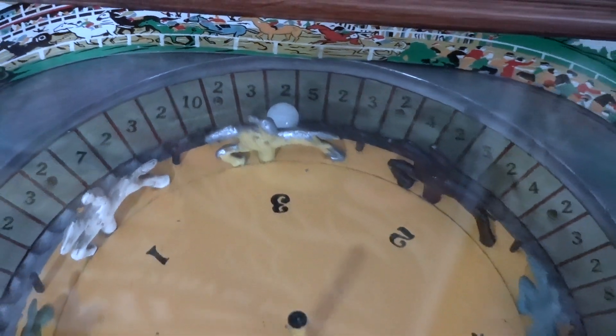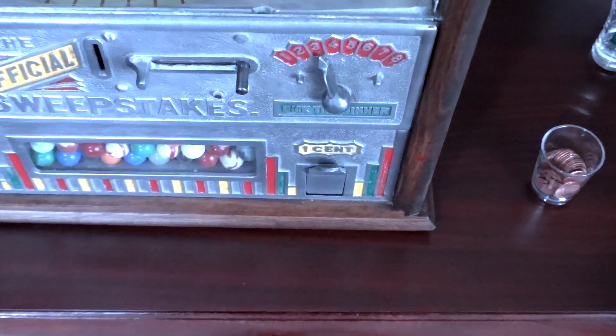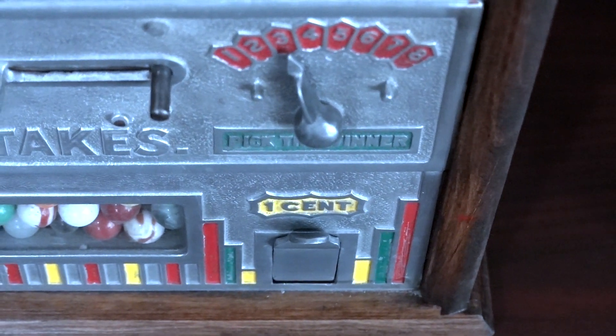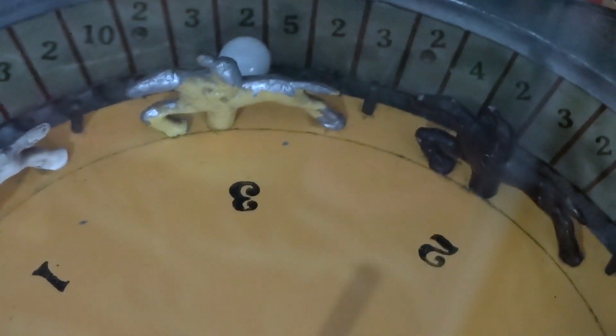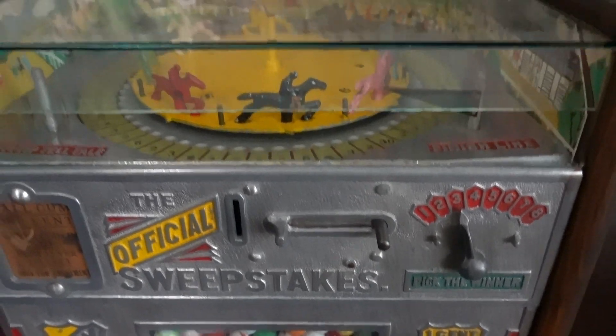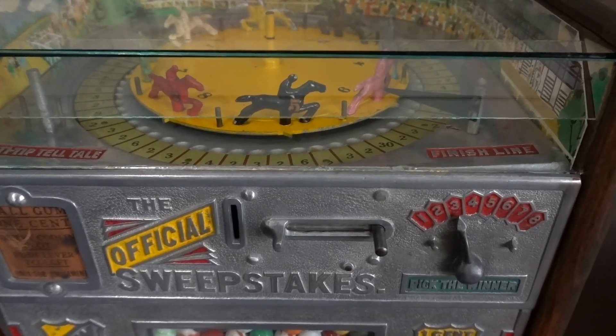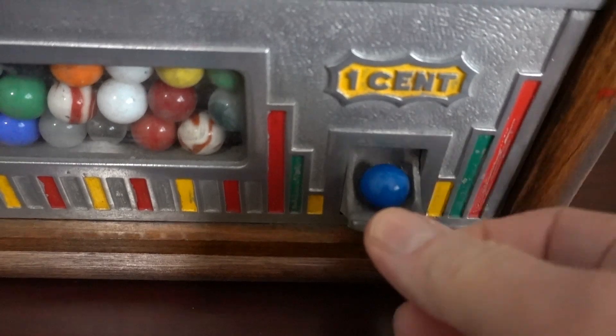So if indeed the number three horse would have come in, it would have paid off at two times. But in reality, what happened is the number six horse came in at two times. It doesn't matter if you win or lose because by design they wanted this to be a gumball dispenser and not a gambling device, so each time you put in a penny you would get a gumball.